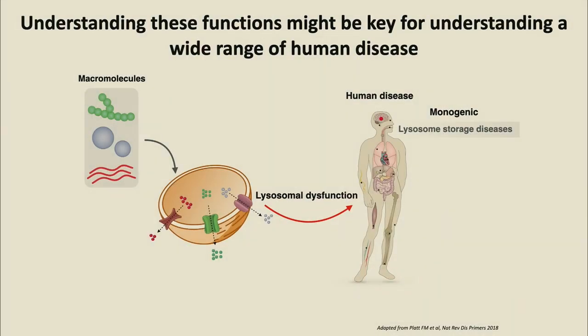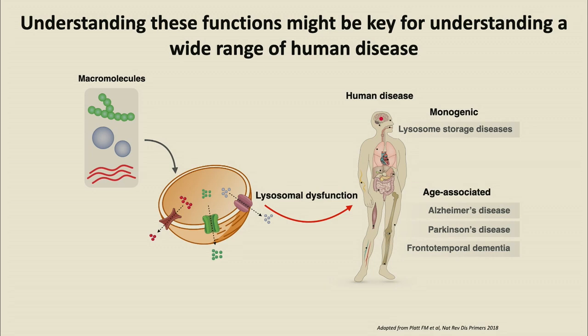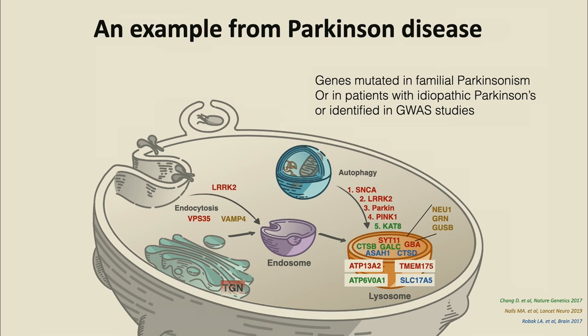This metabolism in the lysosome is key for brain function. Any lysosomal dysfunction, any problem in trafficking molecules to the lysosome to be degraded, generating small molecules, or effluxing them through lysosomal transporters, would lead to human diseases. We can categorize them into two types. On one hand, we have monogenic diseases inherited in a biallelic or recessive fashion — almost 70% would have a neurological phenotype. This interest in the lysosome has emerged because the same lysosomal dysfunction is correlated with initiation and progression of age-associated diseases, including Alzheimer's, Parkinson's, and frontotemporal dementia.